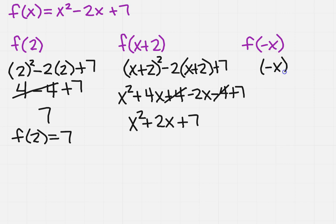So it's going to give me minus x squared minus 2 times minus x plus 7. So this will give me x squared, negative, negative is a positive, plus 7.